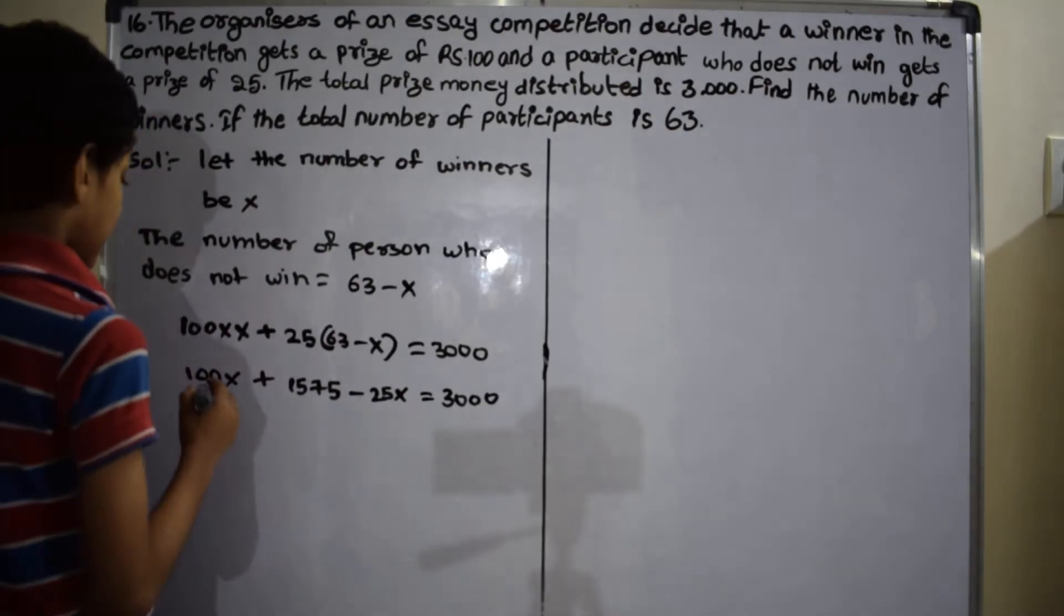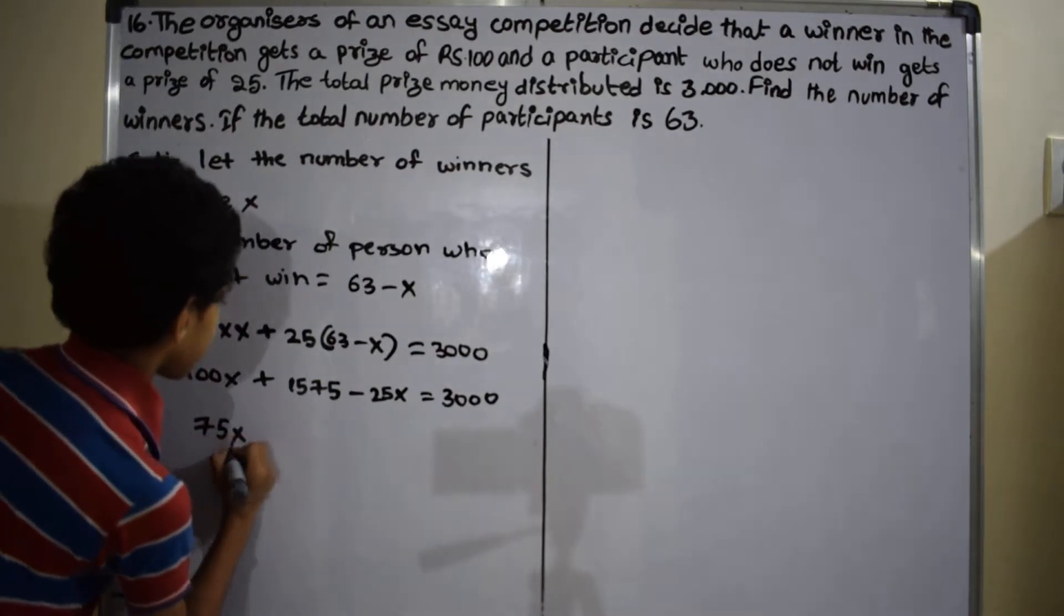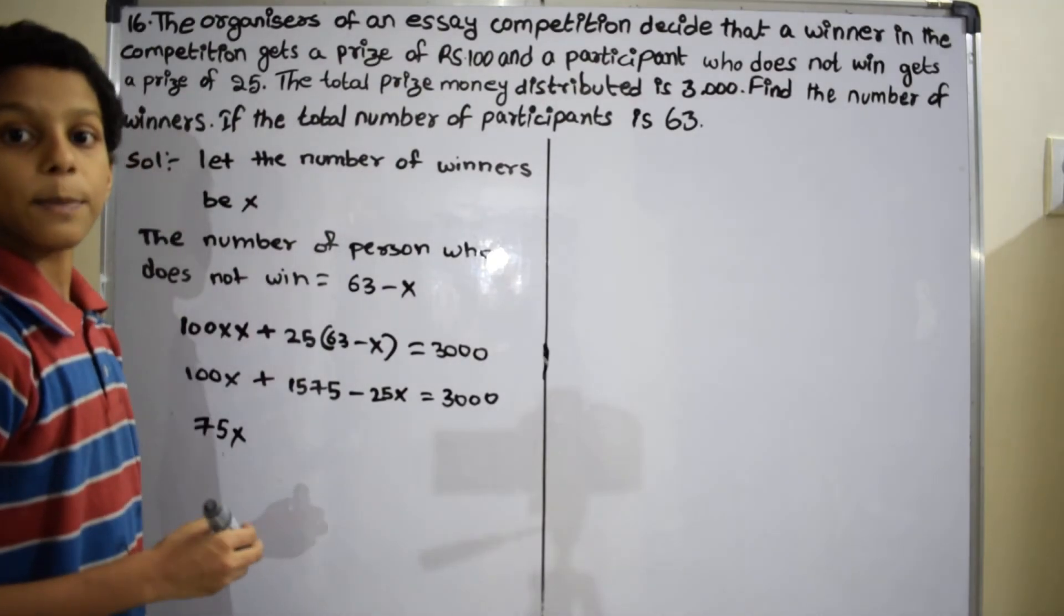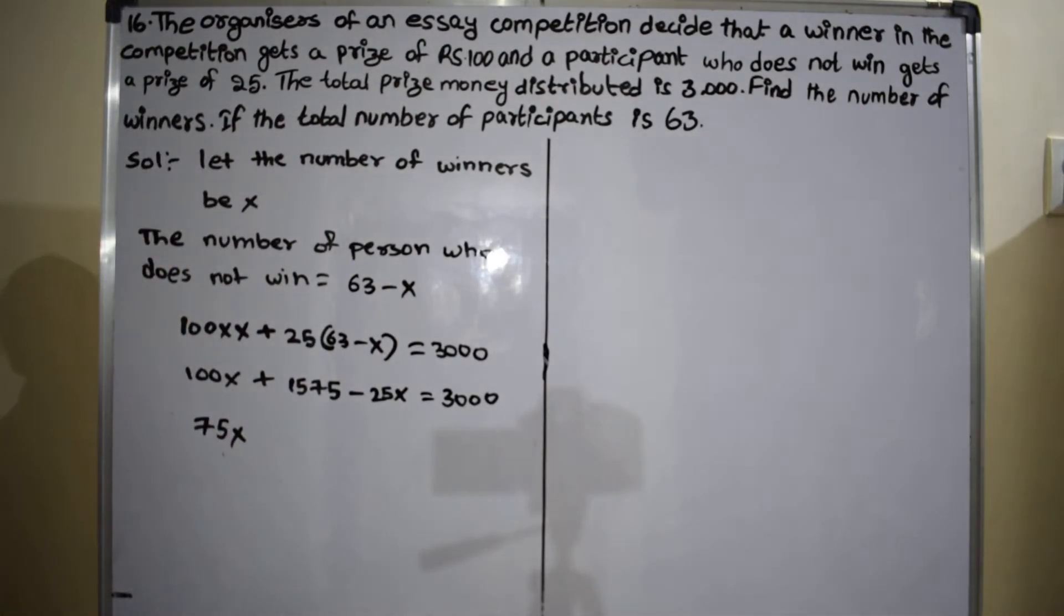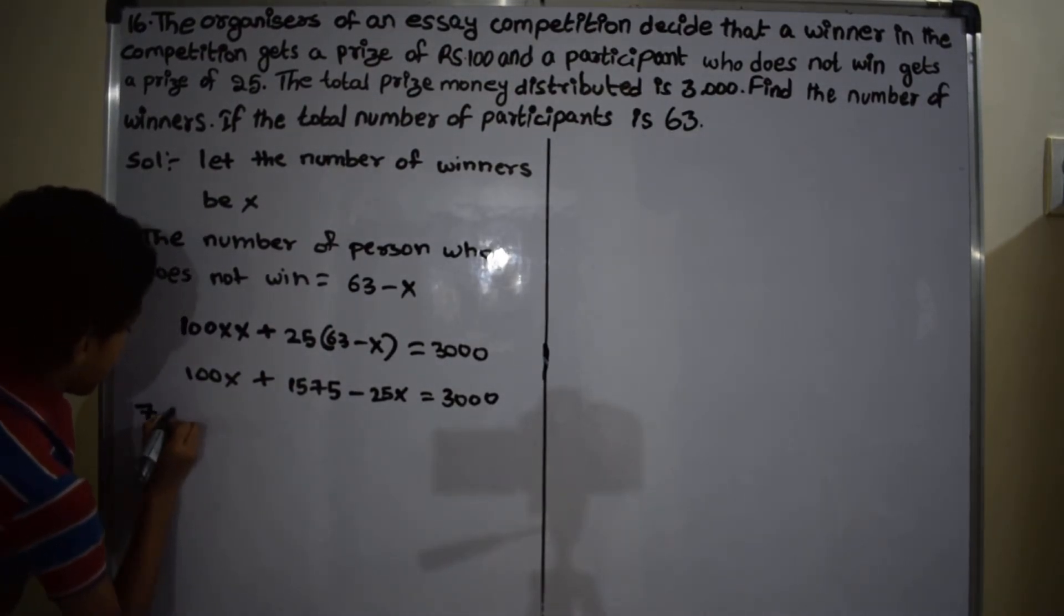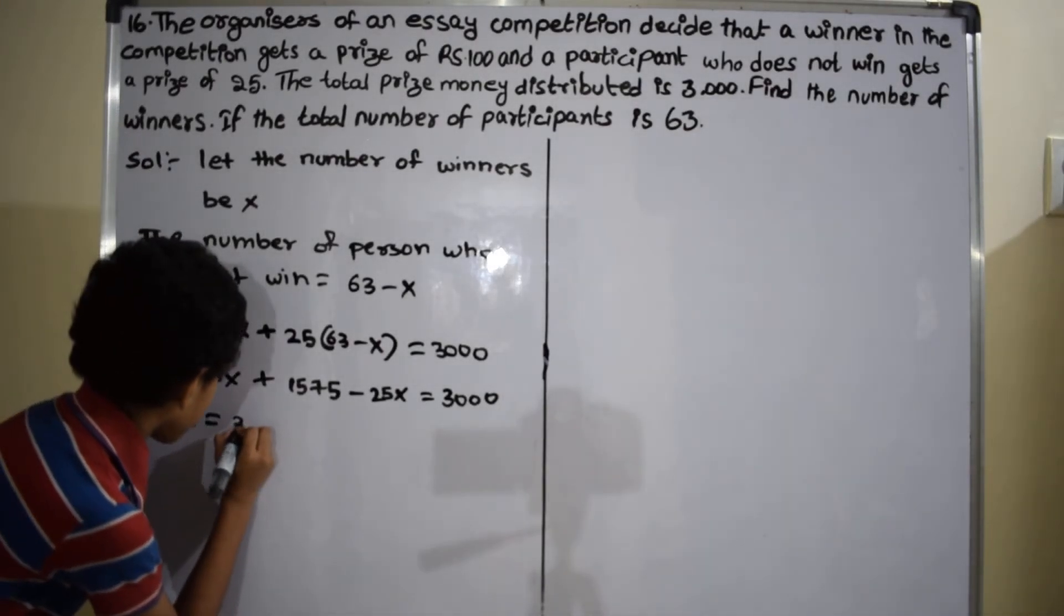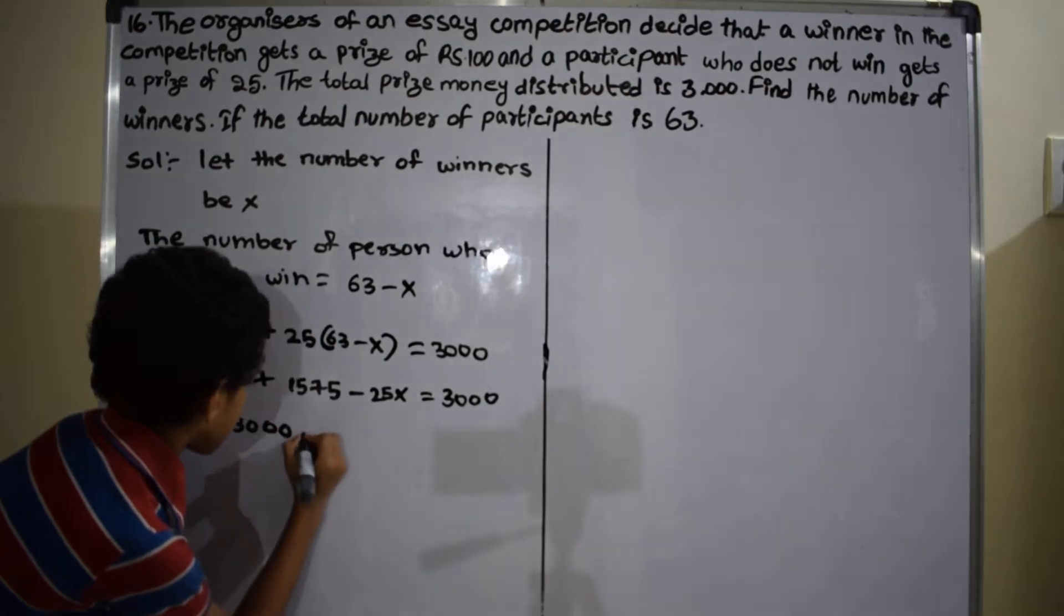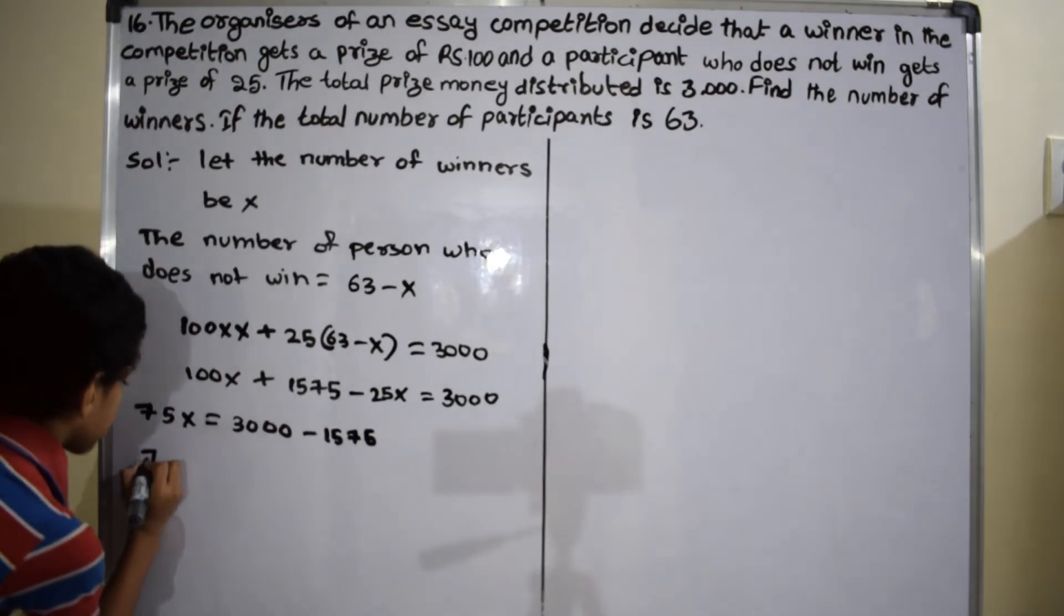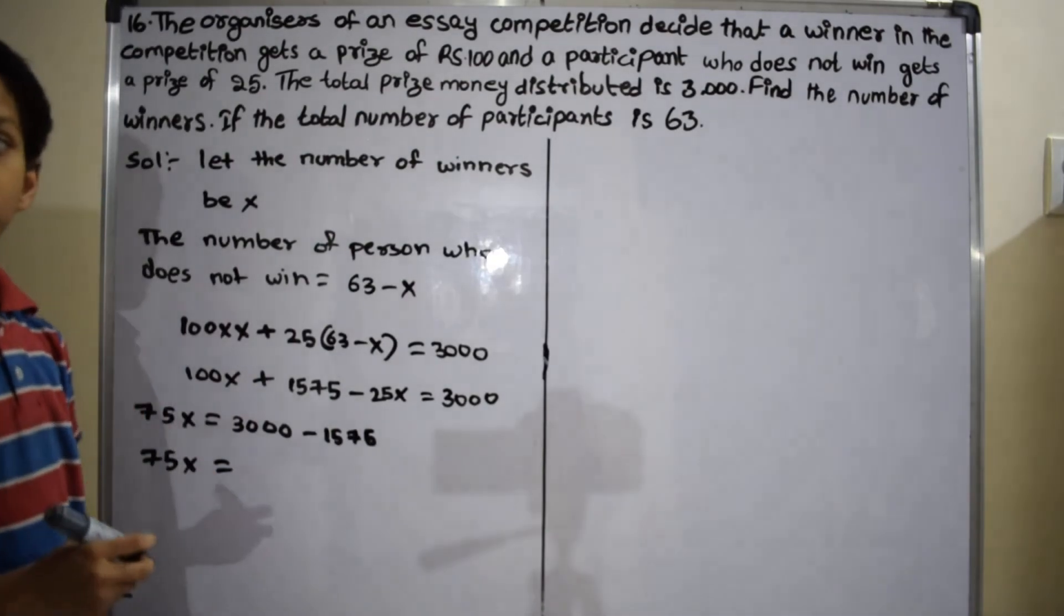In this, 100x minus 25x equals 75x. In this step, now I am transposing plus 1,575 to the right hand side. Then it becomes 75x equals 3,000 minus 1,575. And then it becomes 75x equals 1,425.